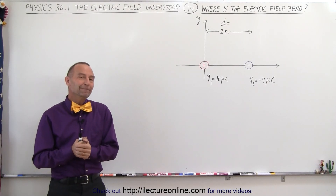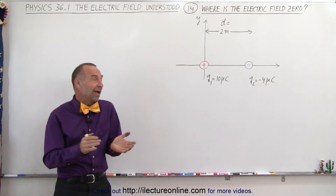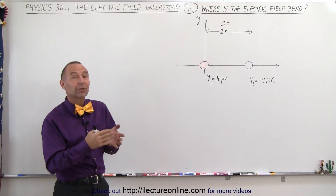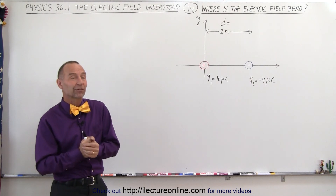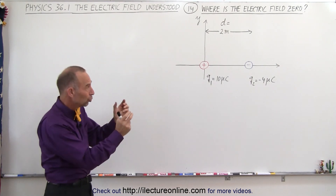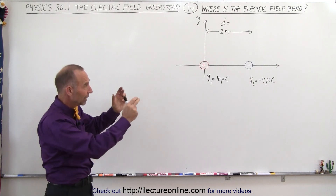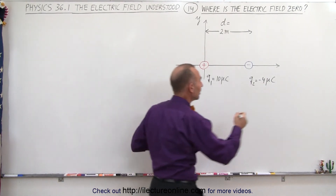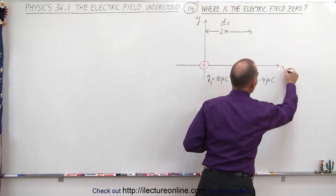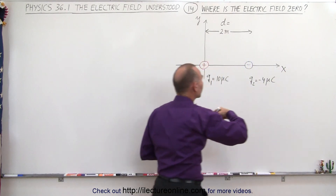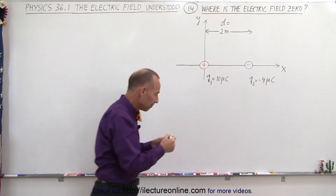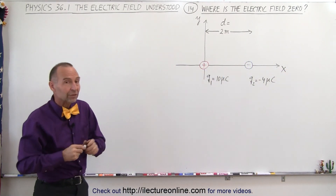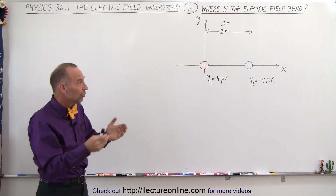Welcome to ElectronLine. Here we have a classic problem dealing with electric fields. We're given two charges placed on the x-axis, and we're trying to find the point on the x-axis where the electric field equals zero.